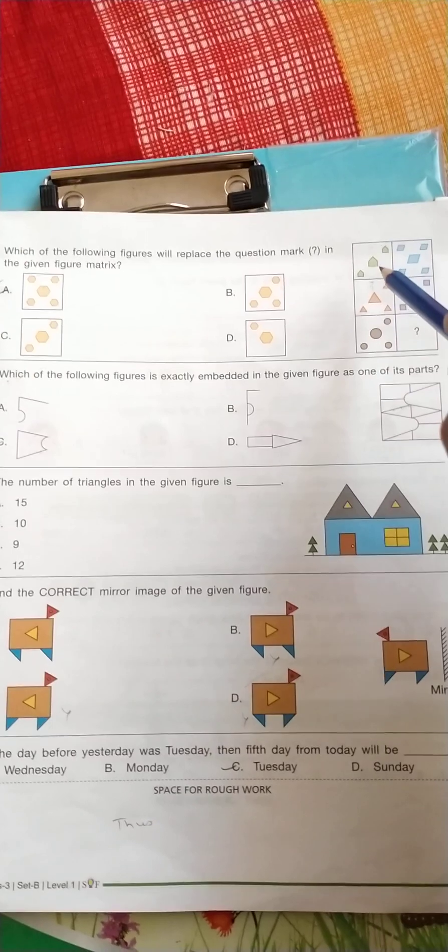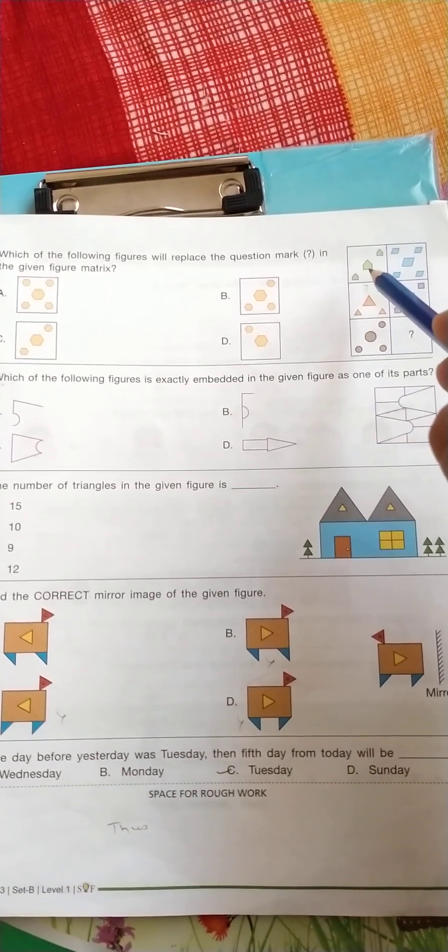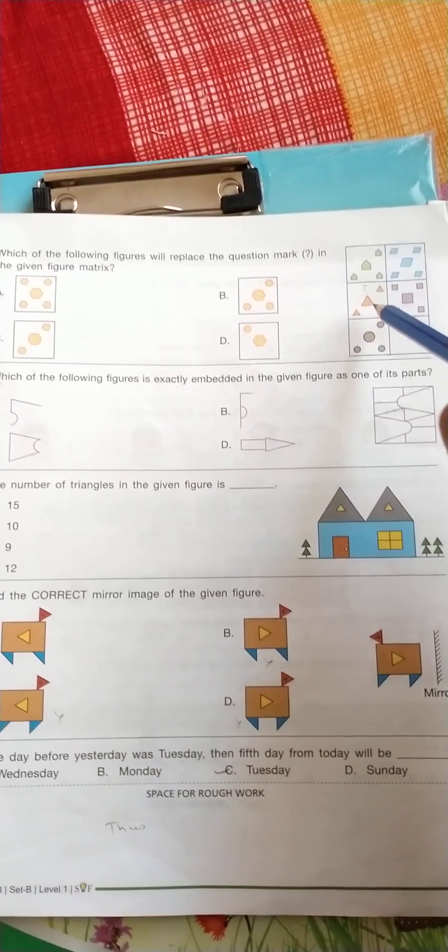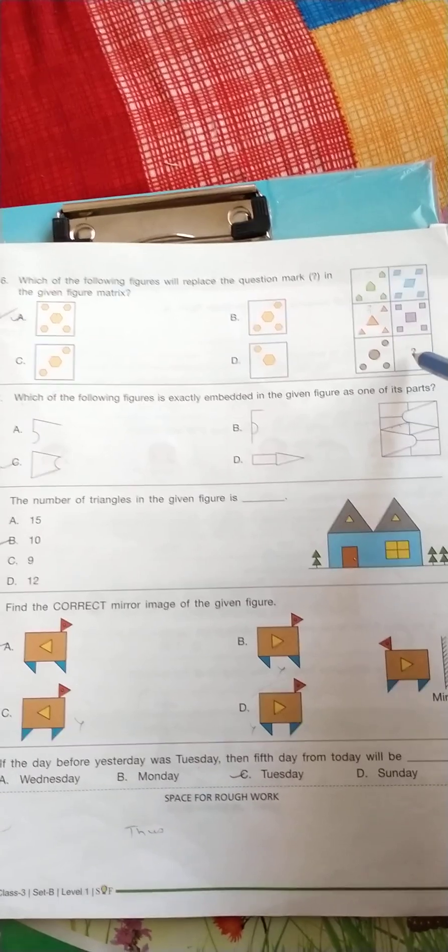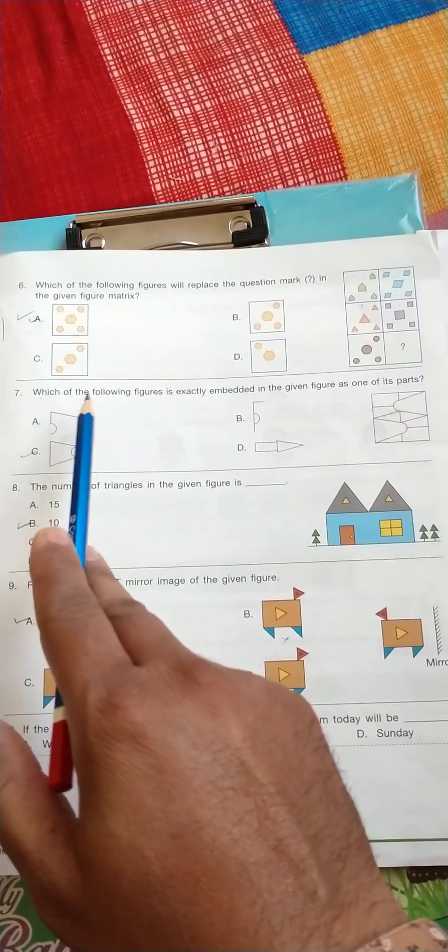So here is four pentagons, here is four triangles, and four circles. So in the same way, here is five, five, so here also five. So the correct answer is A.